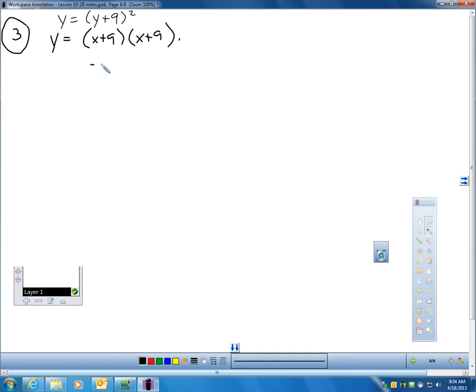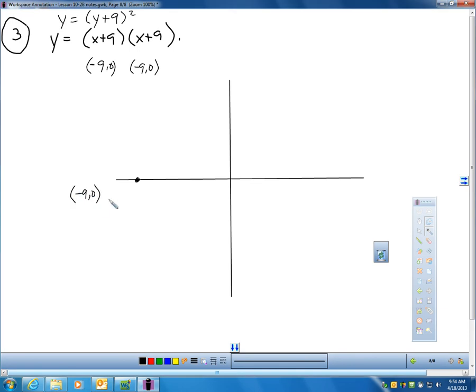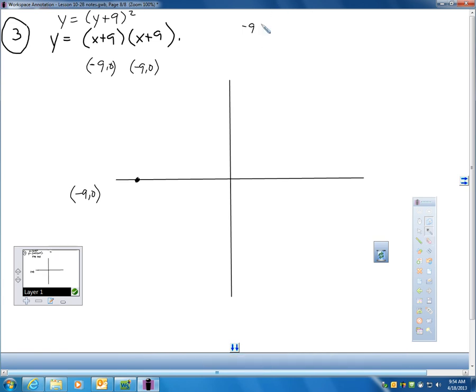So first of all, if I plug in a negative 9 here, I get 0, so there's one X intercept. But if I plug in negative 9 here, I get 0 also. So I'm really getting the same point twice. So now, let me go ahead and graph that, or at least start my sketch. I've got to go to the point negative 9, 0, but I just do it twice, so it's the same point.